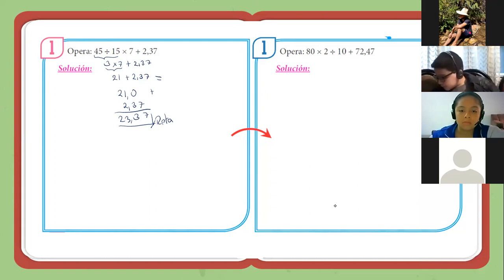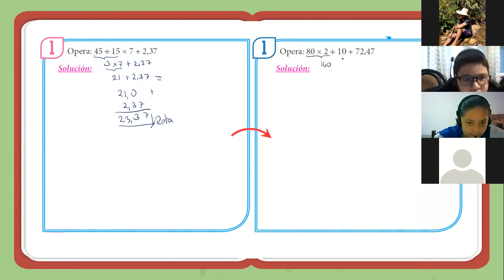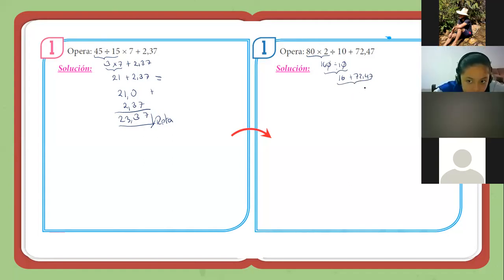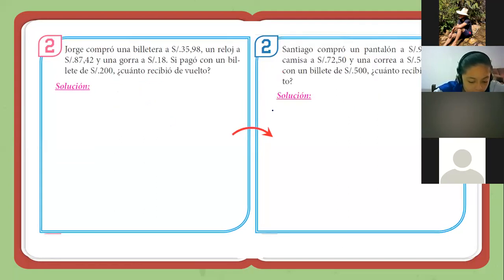Bien, vamos a resolver el ejercicio rápidamente, yo sé que ya muchos ya lo tienen. De acá decimos 80 por 2 sería 160. Dividir entre 10 es quitarle un cerito. Entonces, esto vendría a ser 16 más 72,47. Esta suma sería ponerlo en vertical. Sería 6 más 2, 8, 1 más 7, 8. Y agregamos los decimales. Listo, respuesta. Perfecto, ya. Entonces continuamos. Sé que ya la tenían.